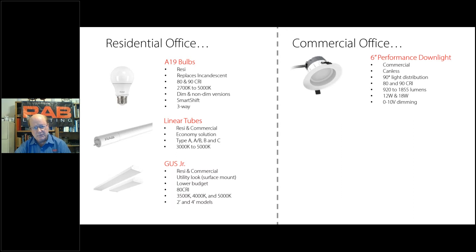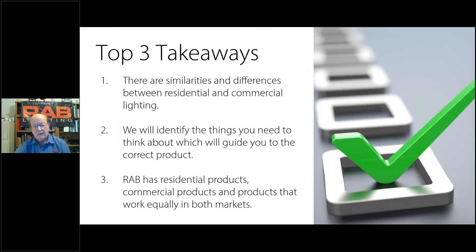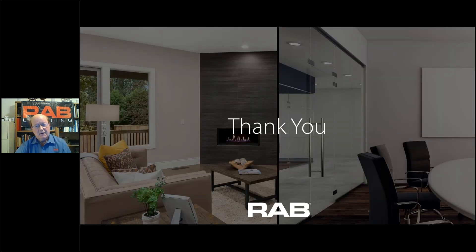Over on the commercial side, we have the 6-inch performance downlight, the Gus — service mount or chain mount — as well as flat panels. The commercial flat panel, our EasyPan, goes in a grid ceiling with low glare and is very cost-effective and easy to install. Reviewing our takeaways: there are similarities and differences between residential and commercial lighting; we've identified the correct product for the right space; and products can be only residential, in the gray area going back and forth, or only commercial — depending on the particular influencing factor, you can select the right product. This concludes our 30-minute segment of our session today, but we do have some additions.